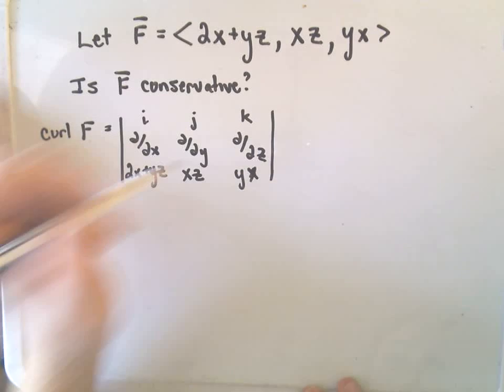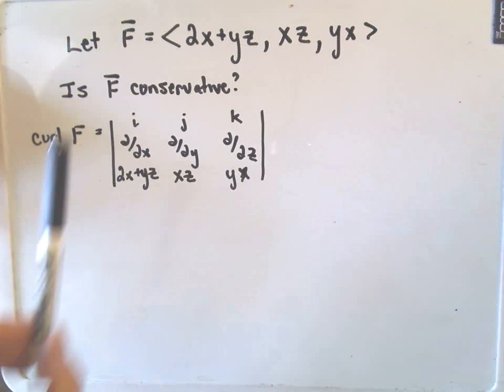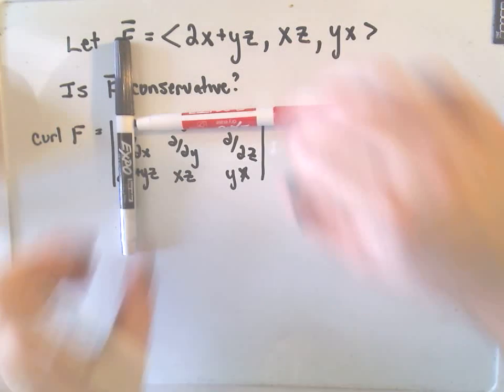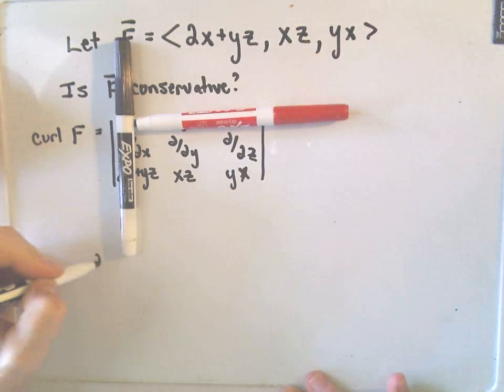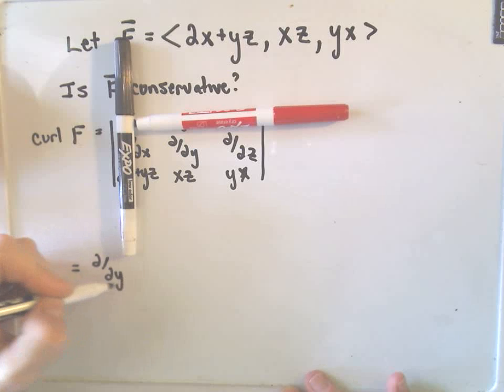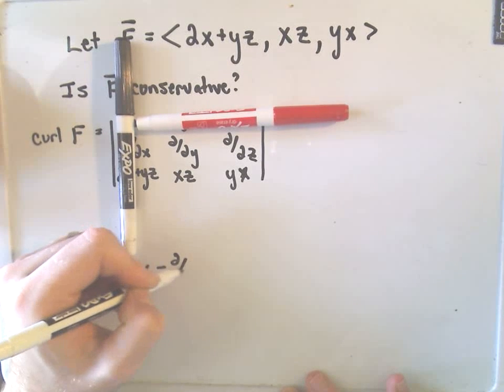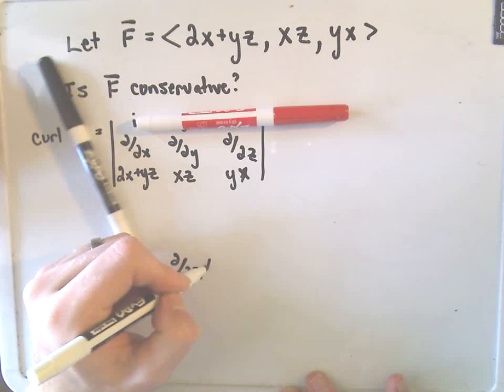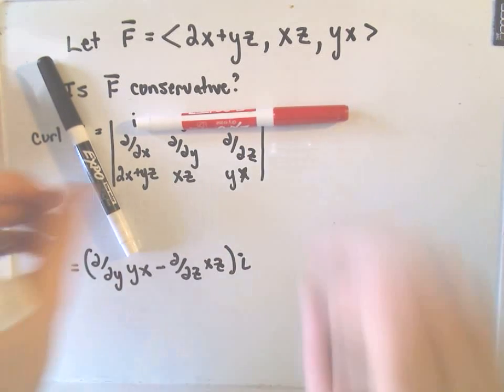And again, now we're just computing a normal cross-product. So, I'm very visual here. Suppose those first two columns are gone. Then we're going to get the partial with respect to y of yx minus the partial with respect to z of xz. That's going to be our i-component.